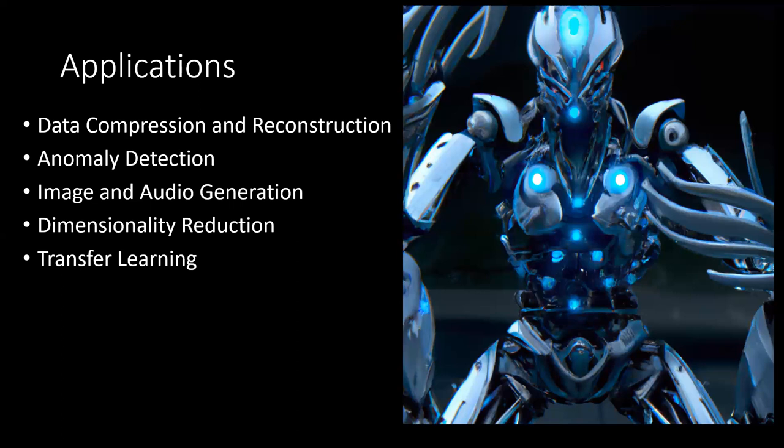Autoencoders can also be used in transfer learning. They can serve as pre-training models for other deep learning tasks such as object detection, image classification, or natural language processing. The compressed representation learned by the autoencoder can be used as a feature extractor for downstream tasks, improving the efficiency and accuracy of the learning process.